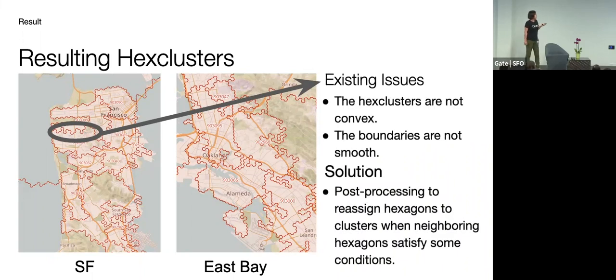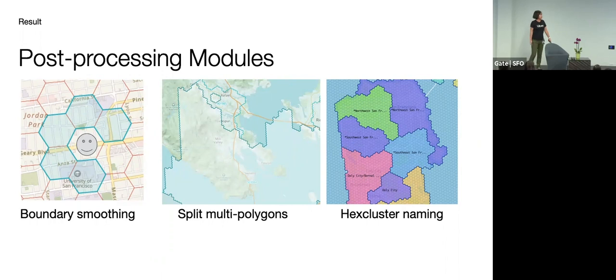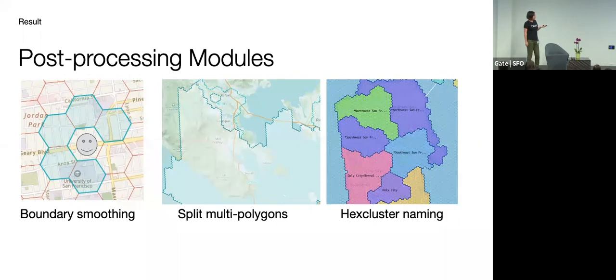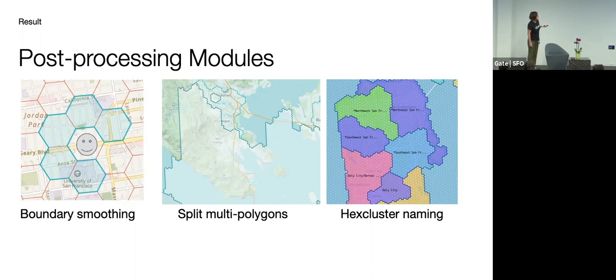So how can we fix that? So we actually carried out a lot of post processing steps to reassign hexagons to other neighboring clusters if we see this kind of rough boundaries. So just a list of few post processing modules that we developed. One is the boundary smoothing. Where we for each target hexagon, we take a look at its direct neighbors. So the six neighbors around it. And then we actually take a look also at the level two neighbors. And if most of the neighbors belong to a different hex cluster, then we just reassign the hex cluster for this hexagon.